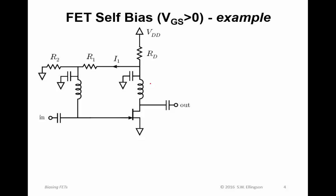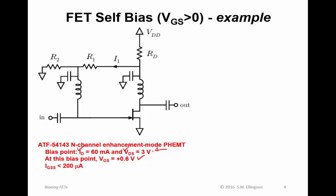The easiest way to show you how to do this is by example. In this example I'm going to use the ATF 54143, an N-channel enhancement mode PHEMT type transistor commonly used in RF designs primarily in low noise applications such as low noise amplifiers. For this particular transistor, I'm going to choose a bias point indicated as I_D equals 60 milliamps and V_DS equals 3 volts. At this bias point we know that the gate source voltage is going to be plus 0.6 volts. We also know for this transistor that the gate current is less than 200 microamps and the power supply should be 5 volts, V_DD equals 5 volts.